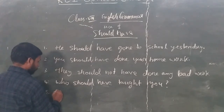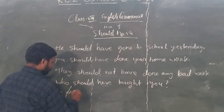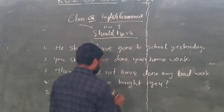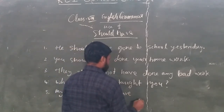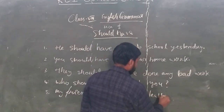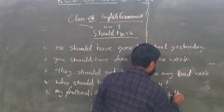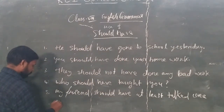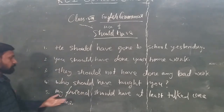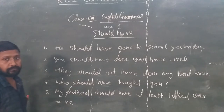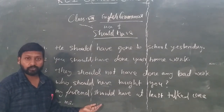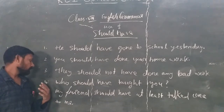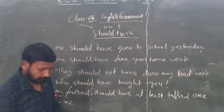Similarly we can write: 'My friend should have at least taught me once.' This means my friend should have taught me at least once. So this type of sentence — 'My friend should have taught me' — is also advice. We can make, translate, and use these types of sentences in daily use and daily English speaking.